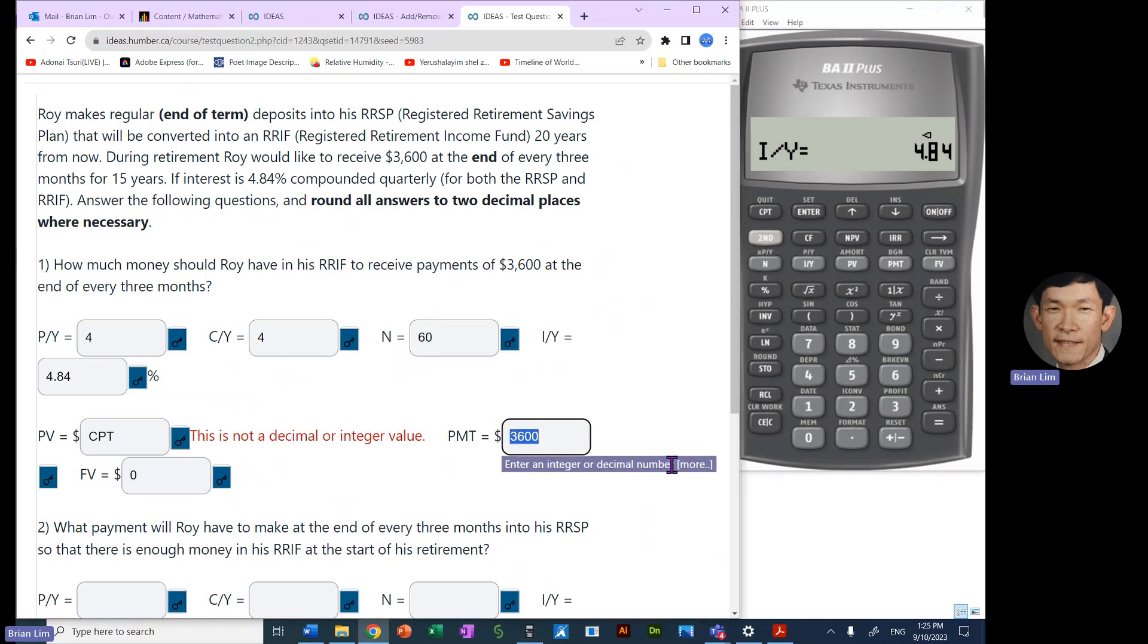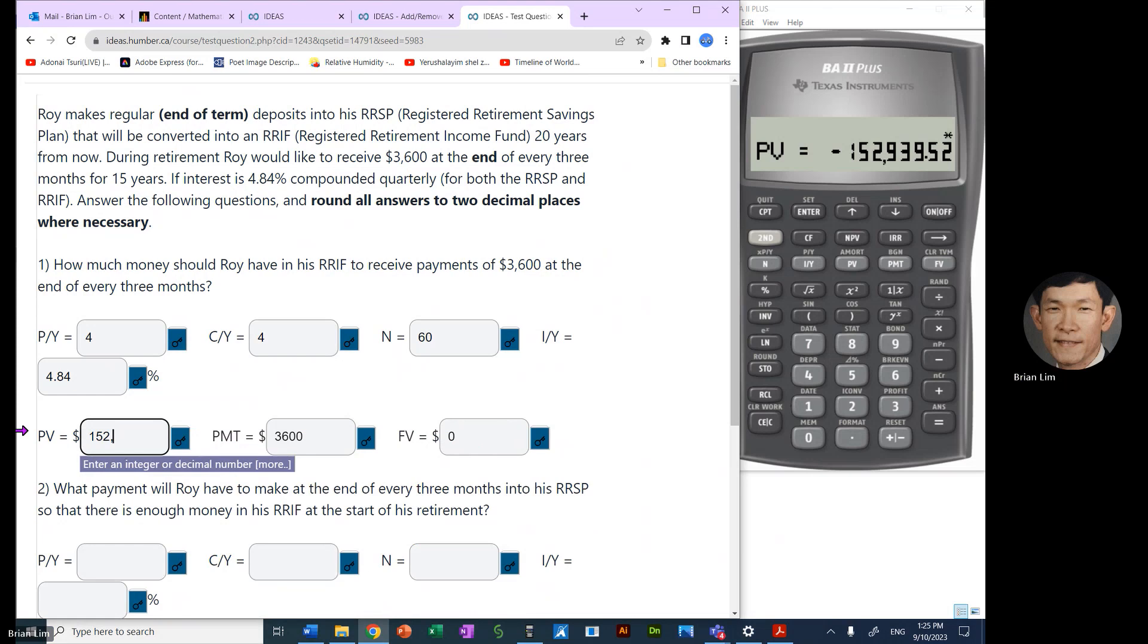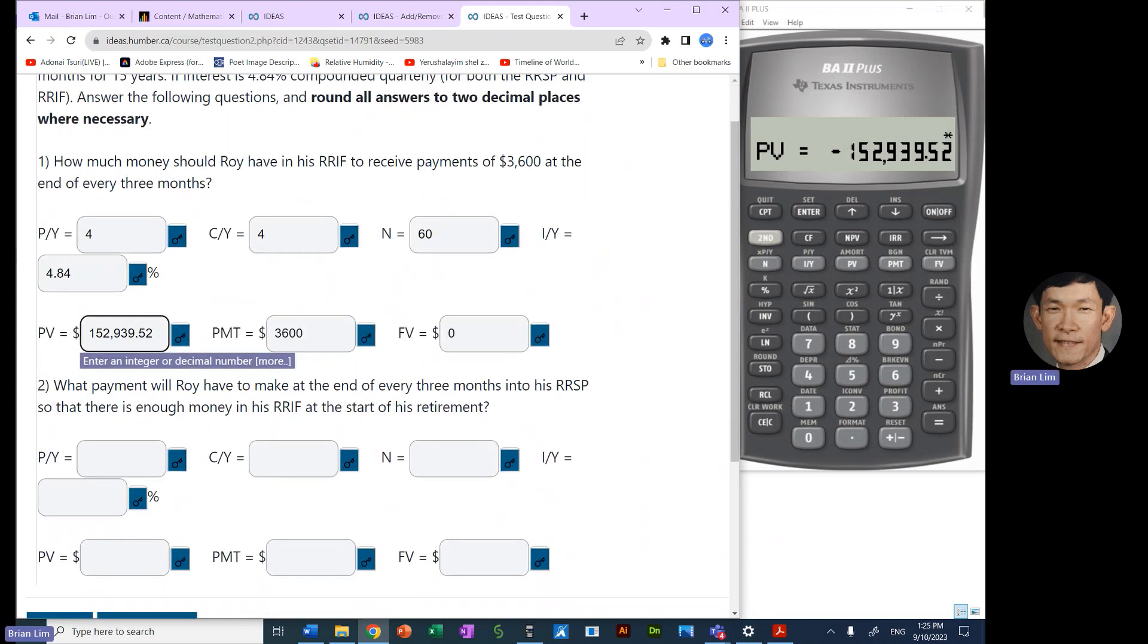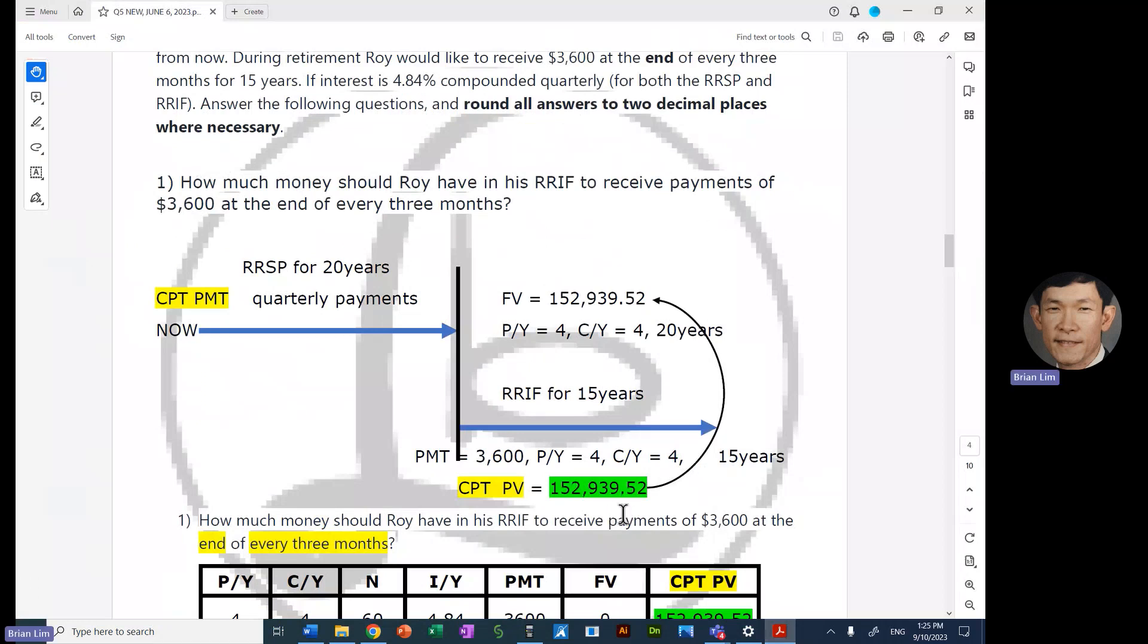We're computing the present value. We put in the payment of $3,600, that is the payment, and then zero for the future value. And now we compute the present value. That turns out to be $152,939.52. OK, so that is the amount that Roy has to have in the account at the end of the 20 years of contribution. All right, so now that is the present value.